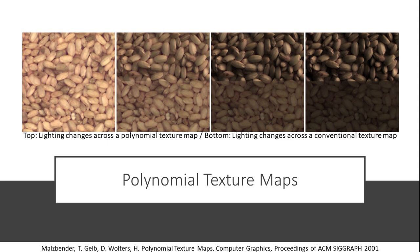This became possible since polynomial texture maps were produced by capturing objects under different angles of illumination, thus including much richer surface information due to surface self-shadowing and interreflections.